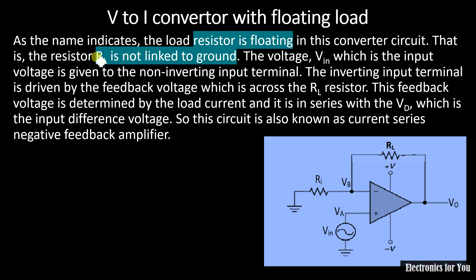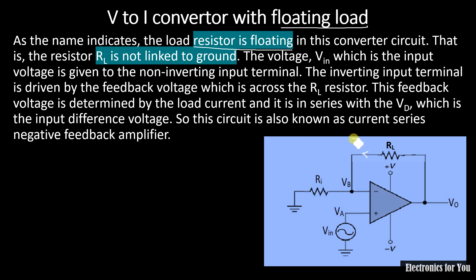As its name indicates, the load resistor is floating. This is the circuit for the V2I Converter with Floating Load. You can see that the input is applied to the non-inverting terminal and the inverting terminal is grounded, so it is a non-inverting amplifier. We will assume that the load current is IL.